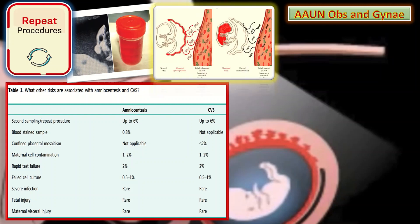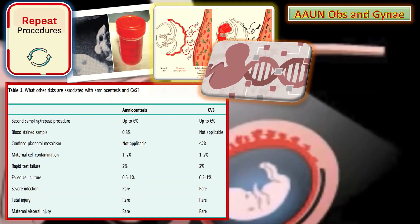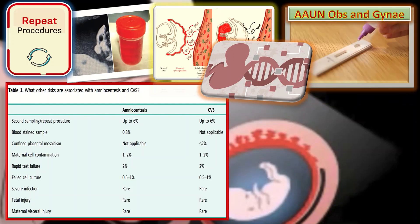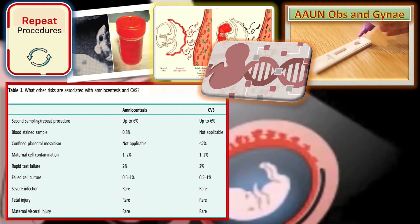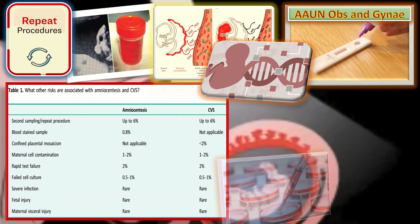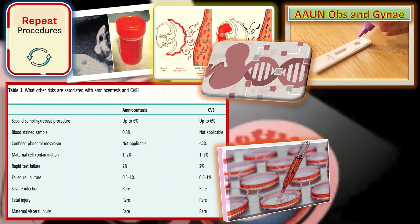Confined placental mosaicism is not applicable to amniocentesis, as we don't take a placental sample, but is less than 0.2% in chorionic villus sampling. Maternal cell contamination is 1–2% with both amniocentesis and CVS. Rapid test failure is 2% with both. Failed cell culture is 0.5–1% with both amniocentesis and chorionic villus sampling.